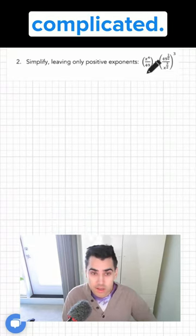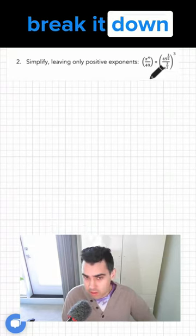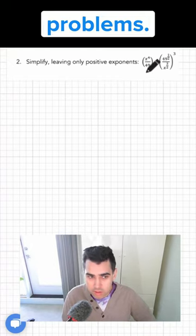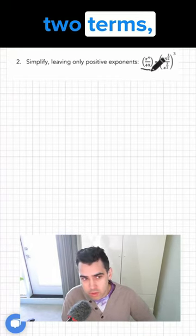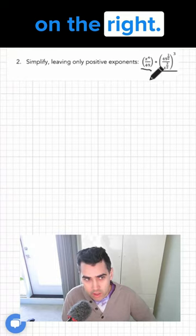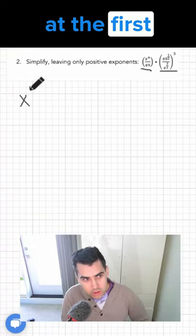It can seem complicated. That's why we have to break it down into smaller problems. So we have two terms, one on the left and one on the right. Let's look at the first term here.